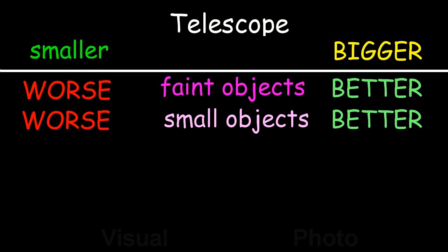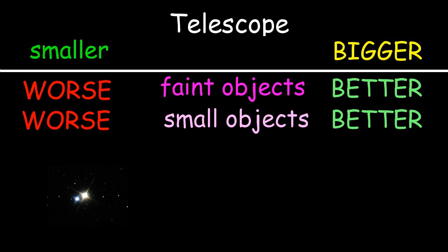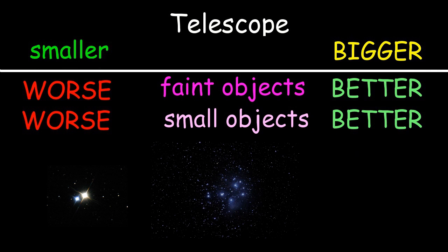The small objects tend to be bright — double stars, star clusters, planets and so on.